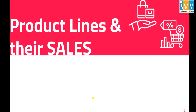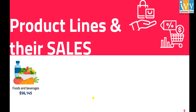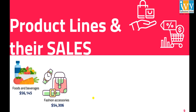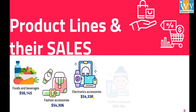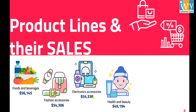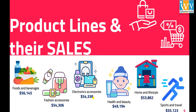The superstore offers six product lines: Food and Beverages, Fashion Accessories, Electronic Accessories, Health and Beauty, Home and Lifestyle, and Sports and Travel. Among them, Food and Beverages generates the highest revenue.